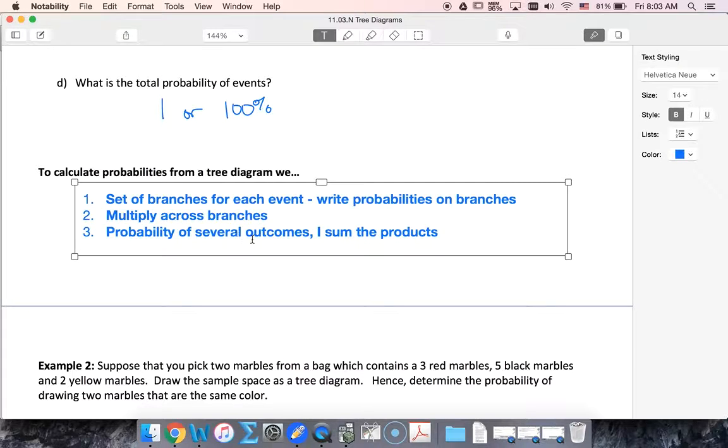If I want to know the probability of several outcomes, I sum the products. So when I multiply, these make products.